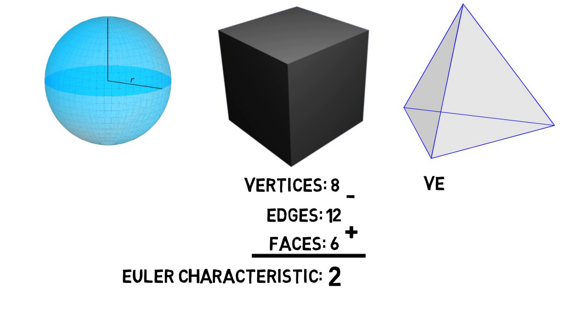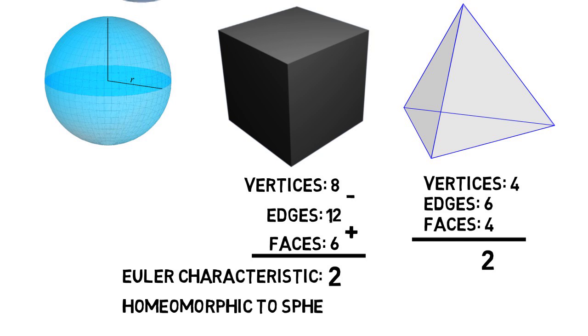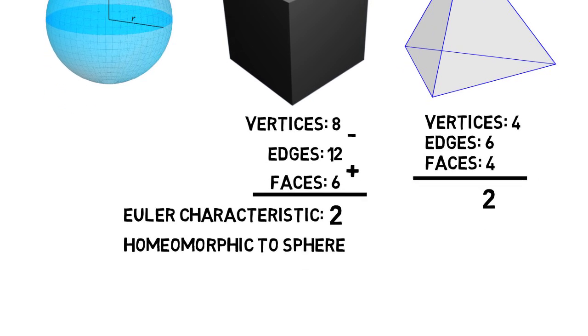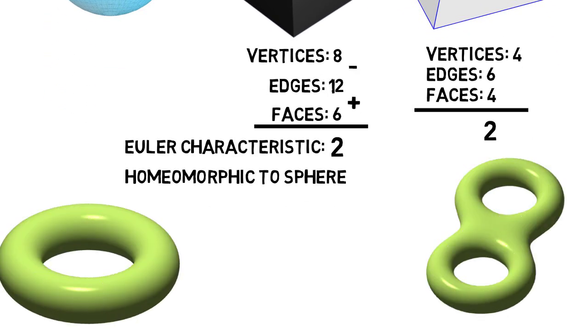Then if you do this with the tetrahedron, you'll find there are four vertices, six edges, and four faces. So you do four minus six plus four, and again, the Euler characteristic is two. In fact, if any polyhedron is homeomorphic to a sphere, then its Euler characteristic is two. And you can use this to prove that something is homeomorphic to a torus, a double torus, and so on, which all have different Euler characteristics.